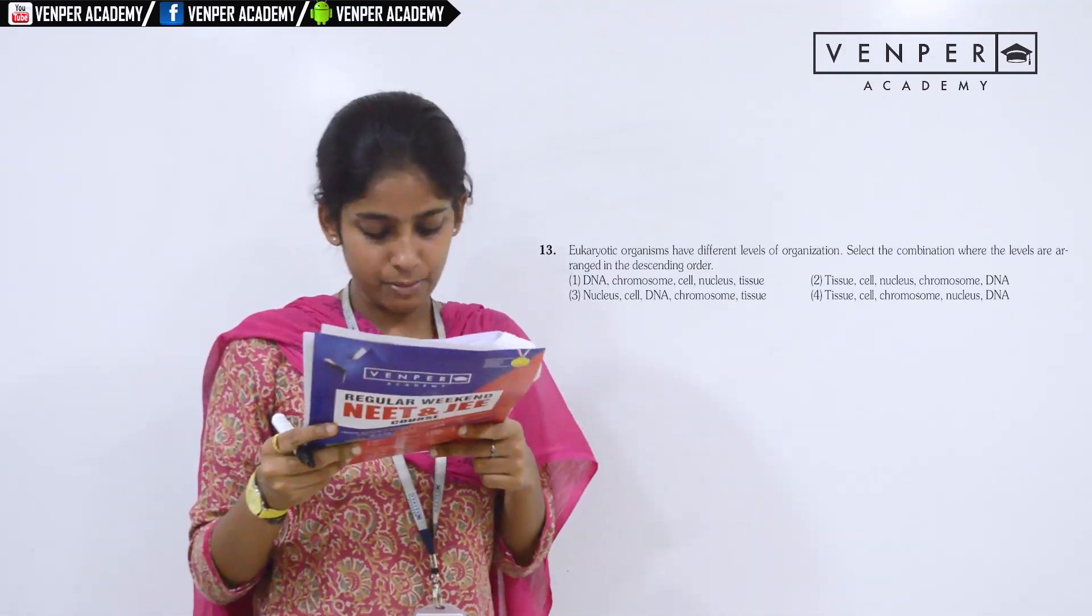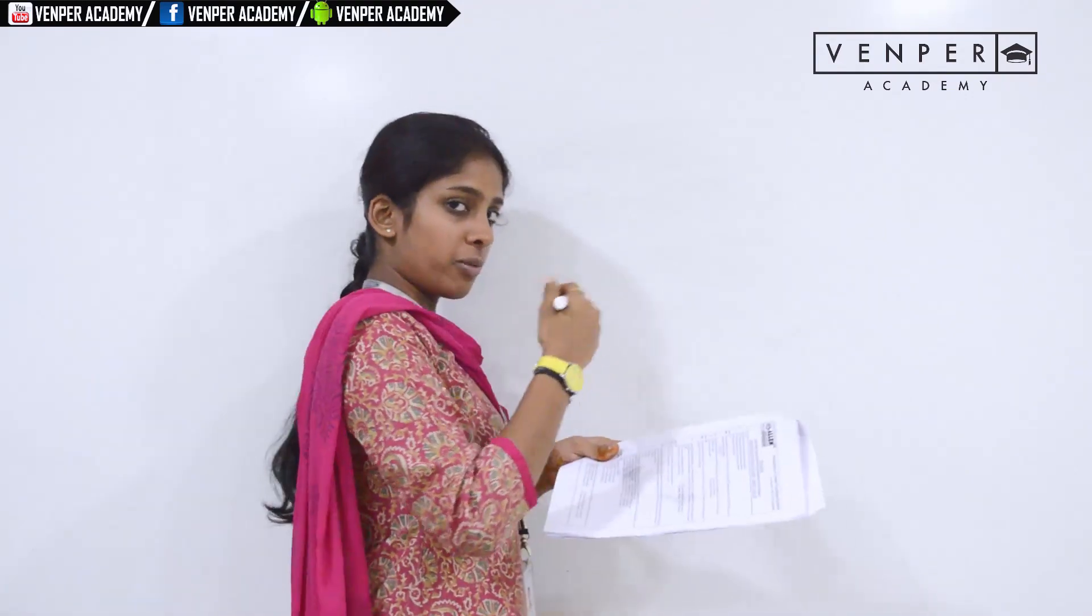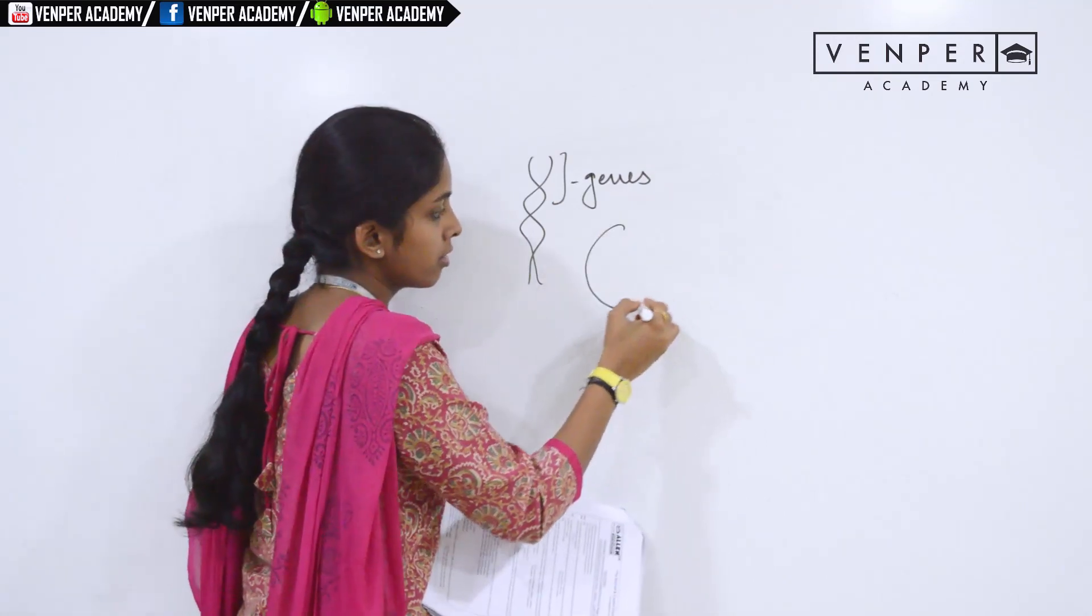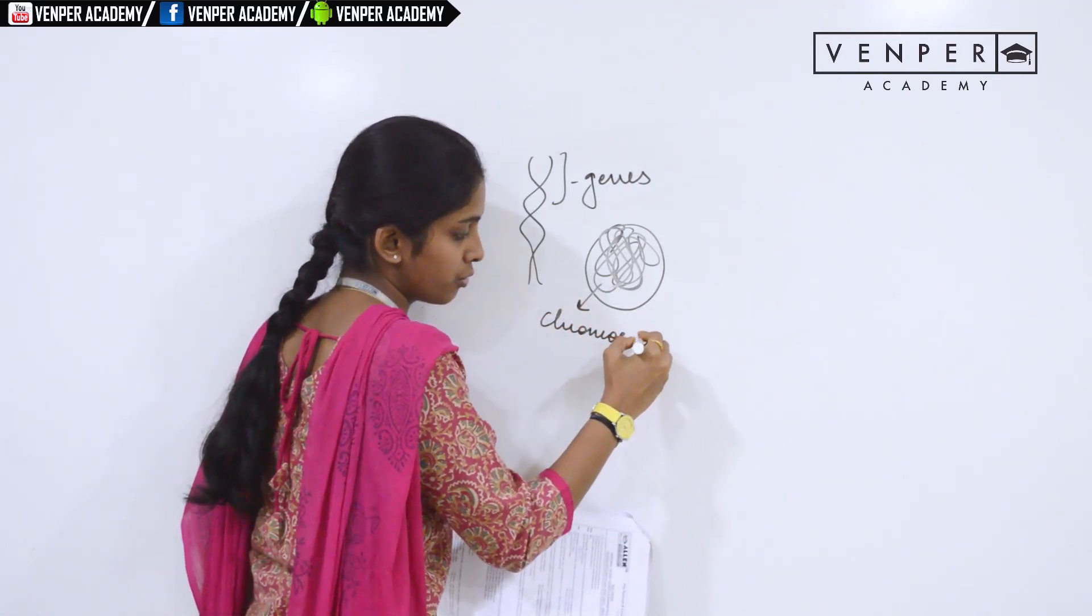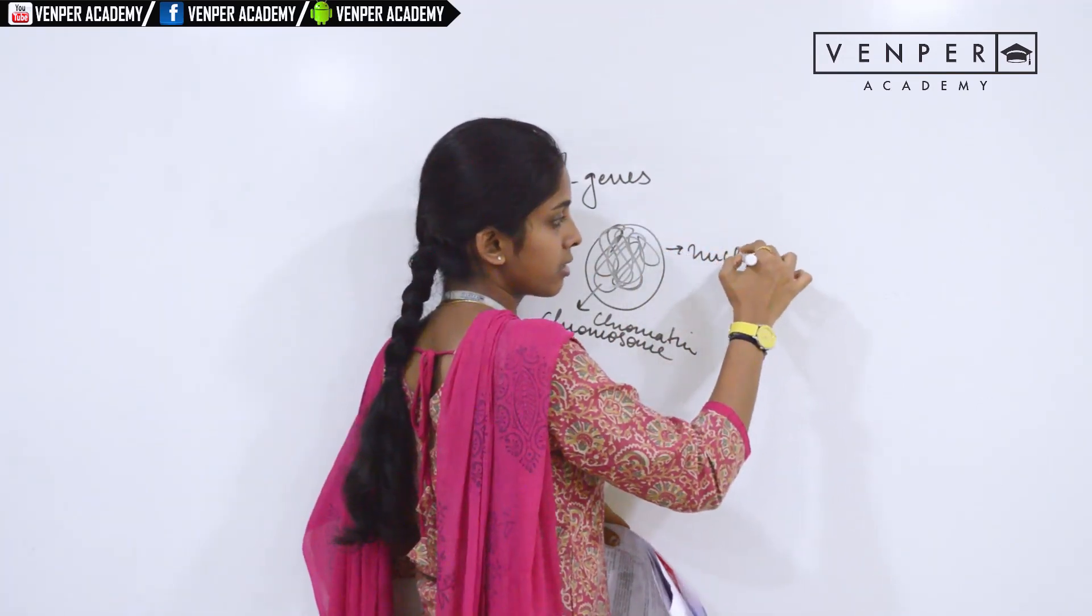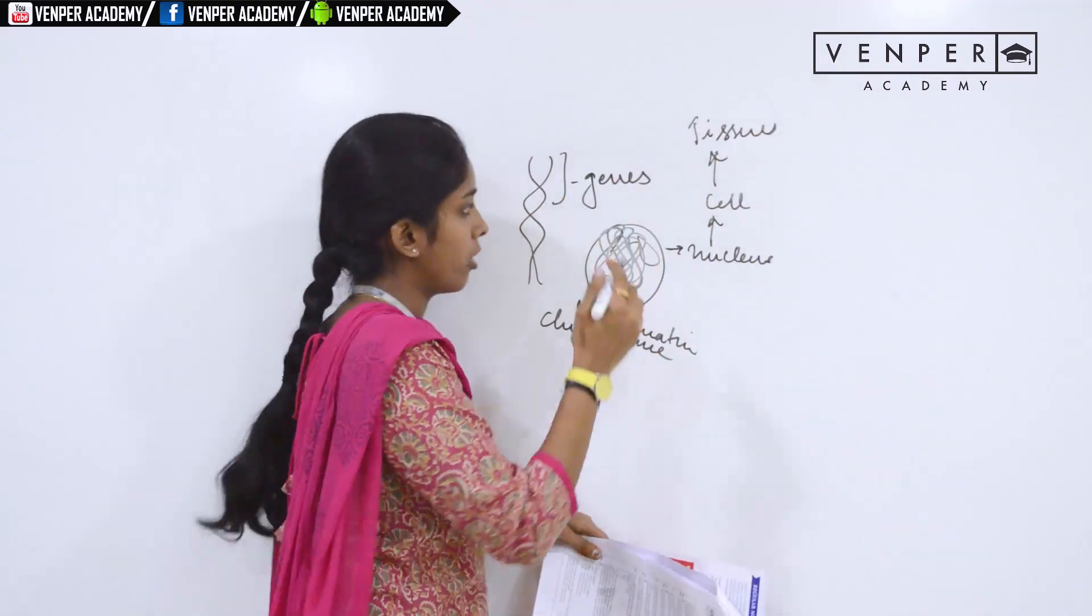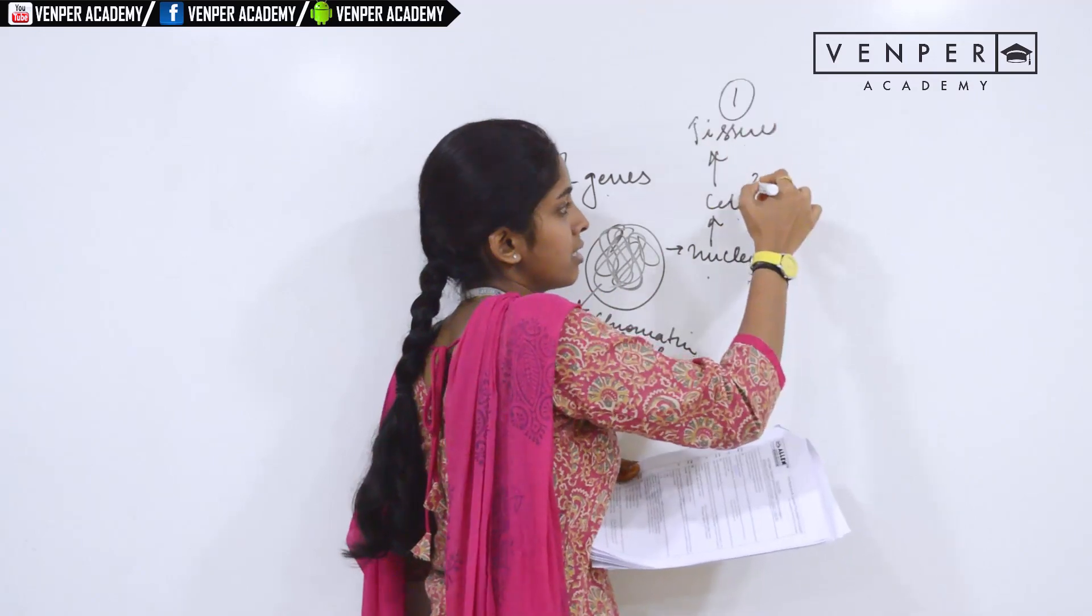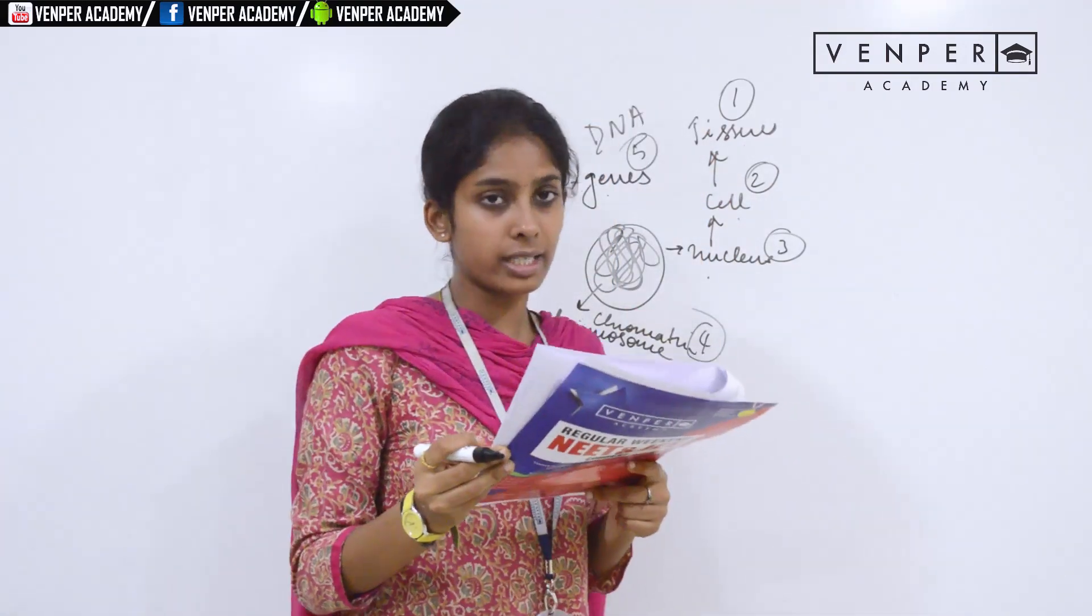Question 13: eukaryotic organisms have different levels of organization. Select the combination where the levels are arranged in descending order. First we go from the basic order. You have DNA. Segments of DNA together are genes. In the cell, genes are clustered in a network-like structure, thread-like network. This is chromosome, the condensed form. This is actually chromatin. The condensed form of chromatin is chromosome. All these are present inside the nucleus. The nucleus is inside the cell, and group of cells make up the tissue. This is the order in ascending order: genes, chromosomes, nucleus, cell, tissue. But they are asking for descending order. So you start with tissues, cells, nucleus, chromosome, genes or DNA. So option 2 is right answer.